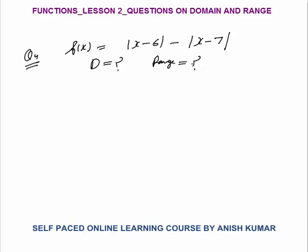Now the domain: you can put any values of x. For all values of x the output will be a real number. So all inputs are valid — you put any value of x and output will be real. You can put 7, 8, 5 by 3, or minus 5 by 3. All are valid. So domain is a real number — you can say minus infinity to infinity. That is the domain of this function.